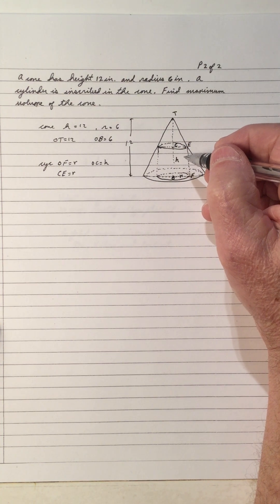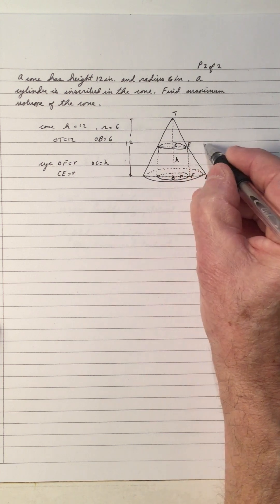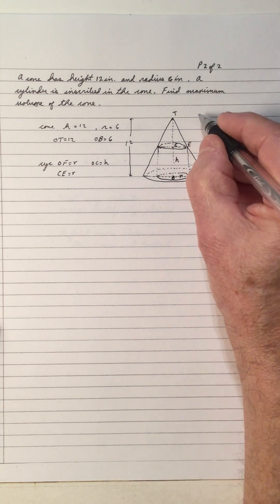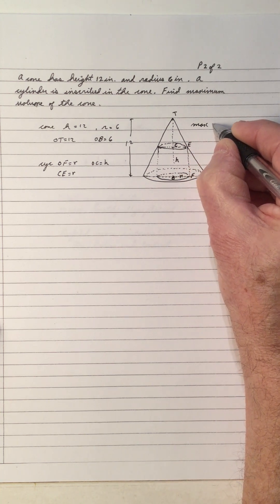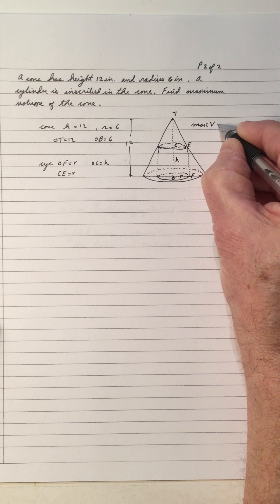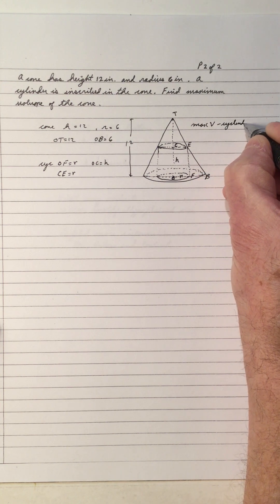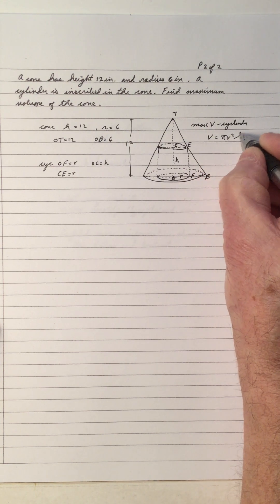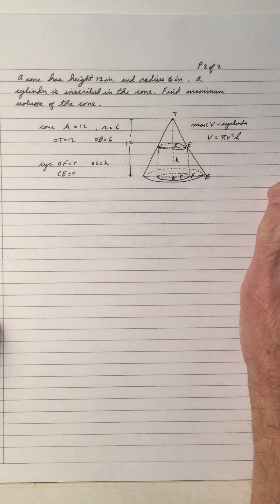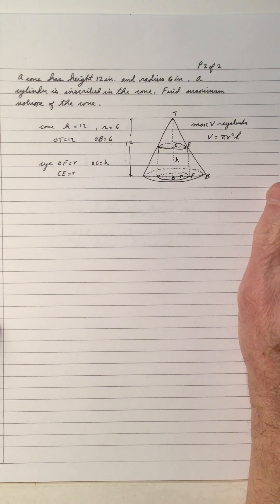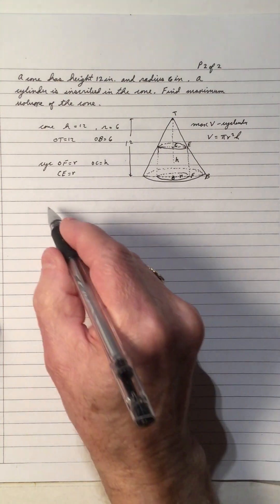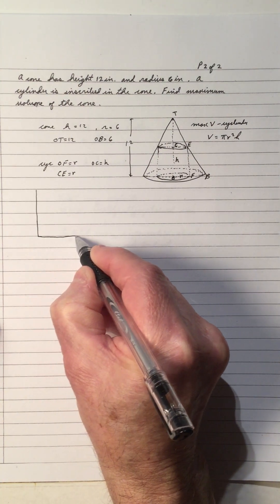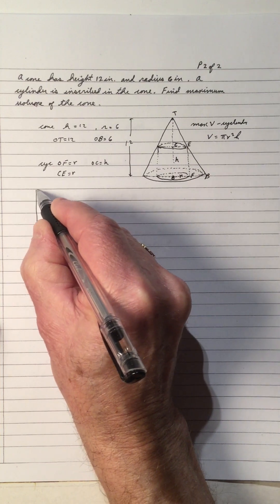Based on all that, we want to find the maximum volume of the cylinder. The volume of the cylinder is pi R squared H. So how are we going to find it? We have a pair of similar triangles — and this is why I picked this problem. Let me draw the triangles.